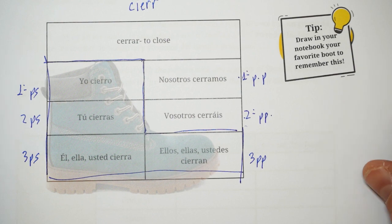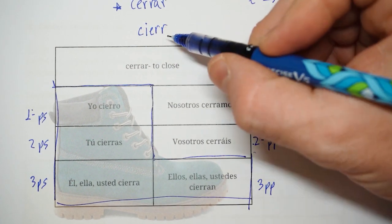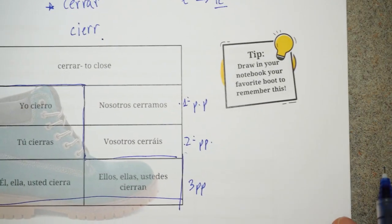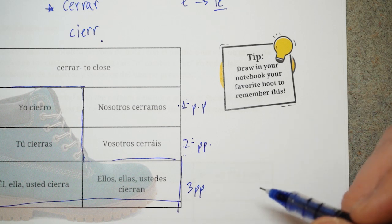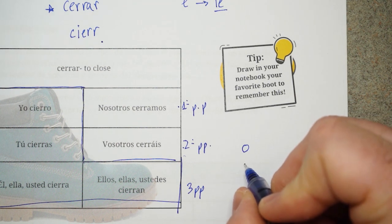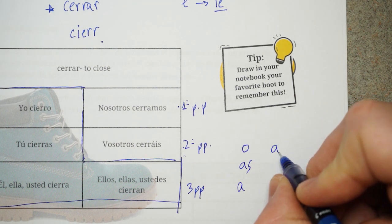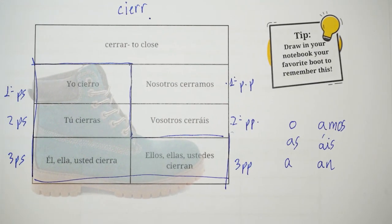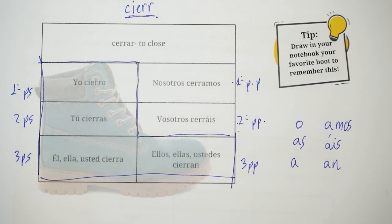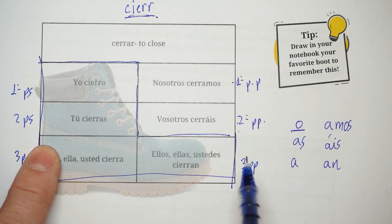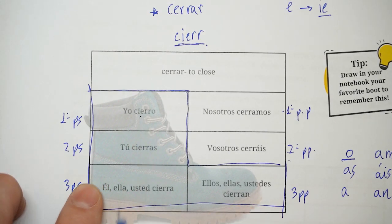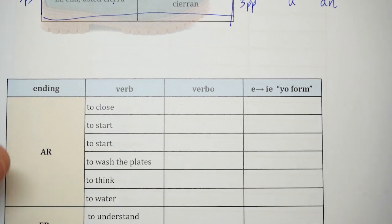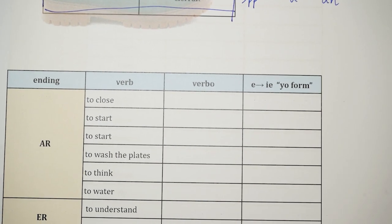The only thing we need to do next, after using the irregular stem, is add the endings for AR-ending verbs that we have studied before. They are: -o, -as, -a, -amos, -áis, -an. So we are basically adding the new irregular stem plus the ending. Therefore we have cierro, cierras, or cierra. And that's exactly the exercise we are going to do right here below in the same worksheet.